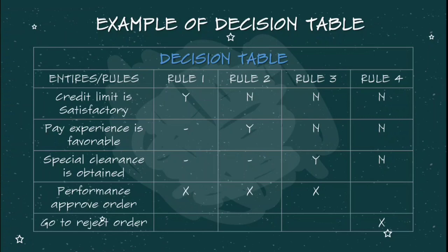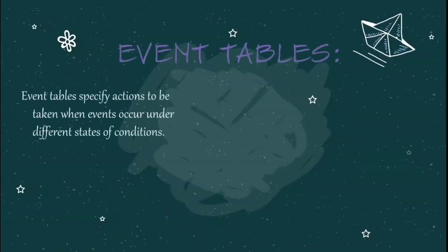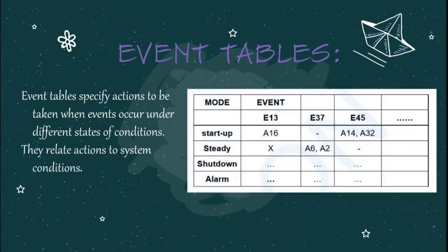Let's move on to the next example: event tables. Event tables specify actions to be taken when events occur under different states of conditions. They relate actions to system conditions. Here you can see the example for event tables — the table specifies the modes and events that occur. Event tables are viewed as two-dimensional tables or of higher dimensions.